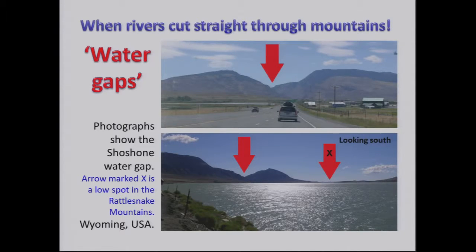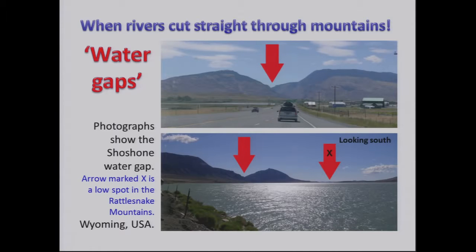You can see one at the top there, where the Shoshone River, starting at Yellowstone National Park in the USA, flows east straight through the Rattlesnake Mountains as if they weren't there. What's fascinating is that the river could easily have continued in a slightly more southerly route and gone round the mountains — you can see that low point on the slide at the bottom, marked X, just a couple of miles away. Yet it didn't do that. It's a complete mystery why the Shoshone River continued eastward, oblivious to the mountainous obstacle, cutting this incredible gorge.